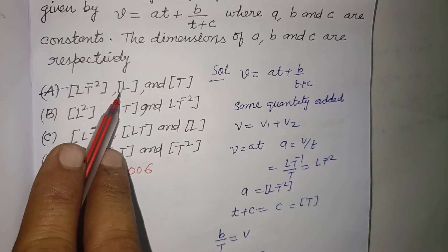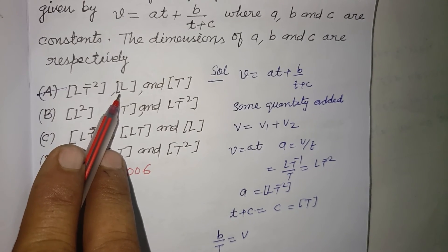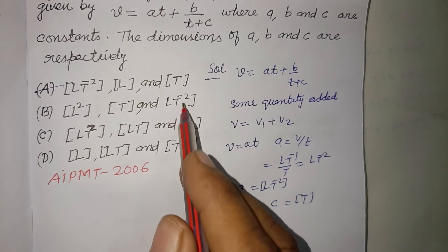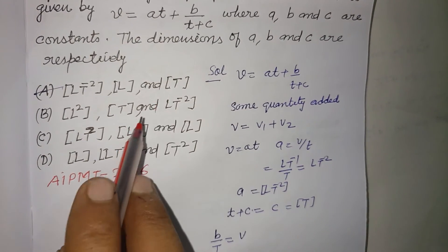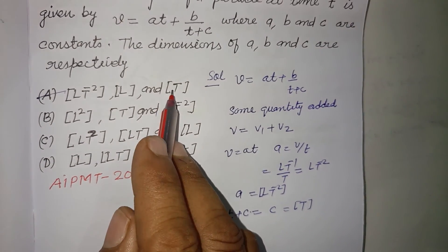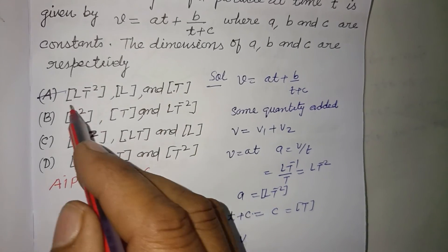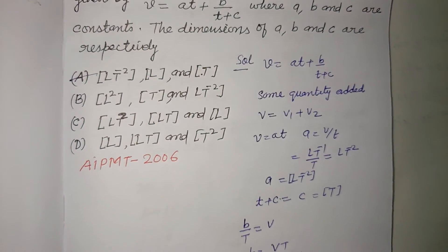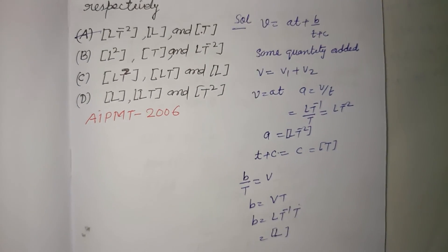So b is L, c is T, and a is LT⁻². This is the correct answer to the question. I hope you got it. Please like the video and subscribe to the channel. Thanks for watching.